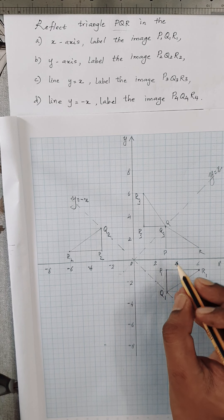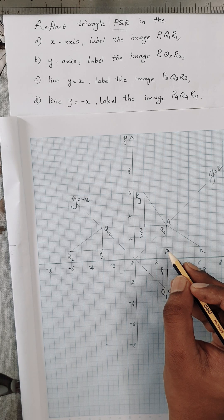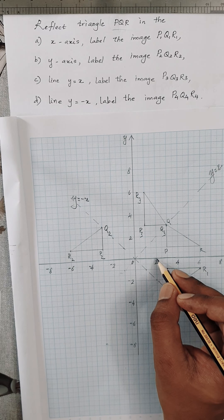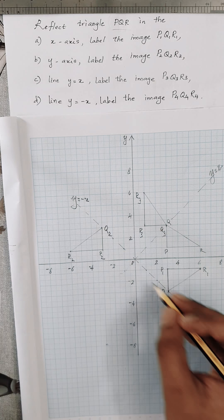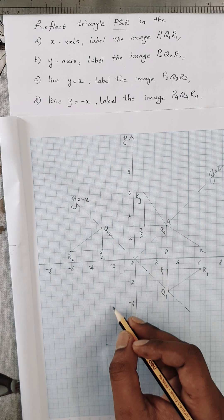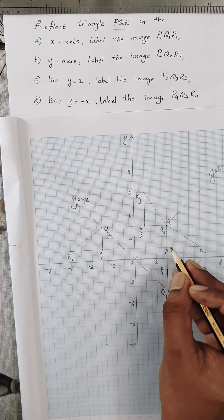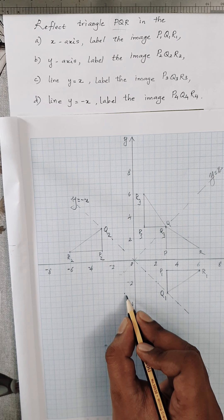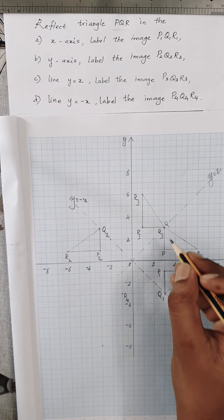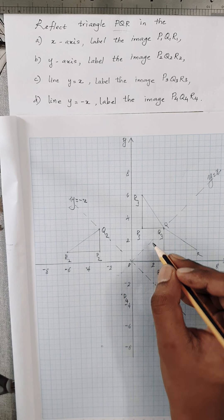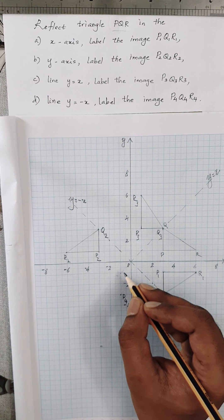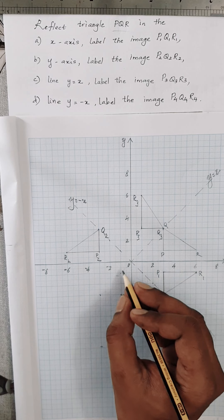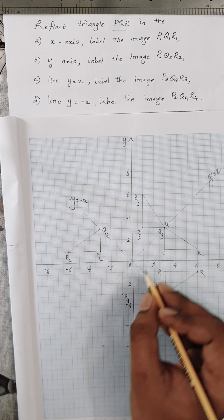Our object is triangle PQR. Let's take point P. We take the diagonal distance from the mirror line and reflect perpendicular to the mirror line on the opposite side. P is 2 units diagonal from the mirror line. We count the same distance of 2 units to the opposite side perpendicular to the mirror line, and mark the point as P4. For the second point Q, the diagonal distance is 3 units. We count 3 units to the opposite side the same way. That's point Q4.